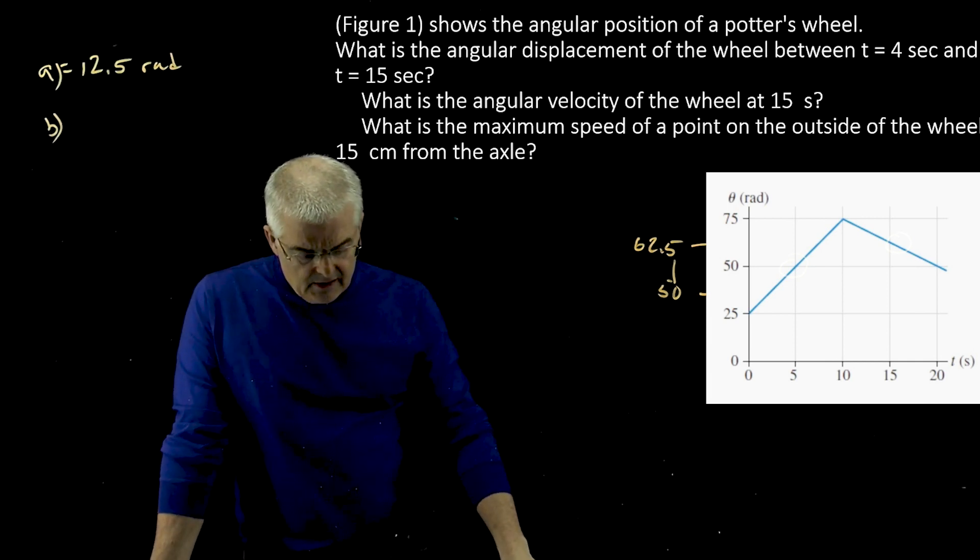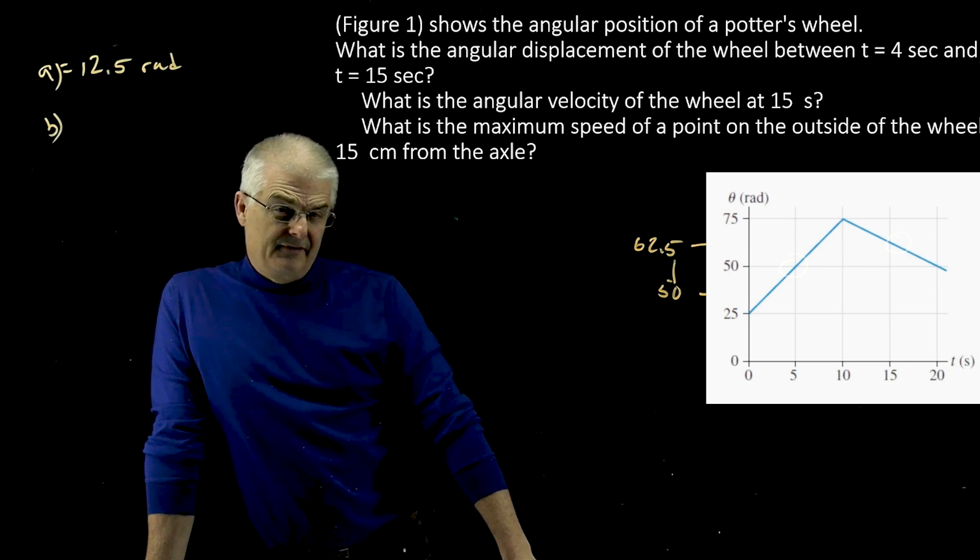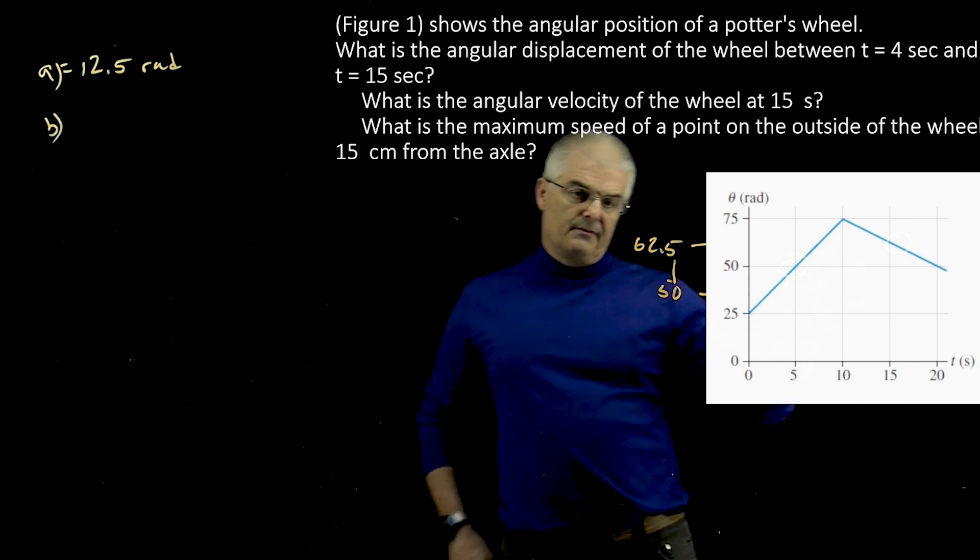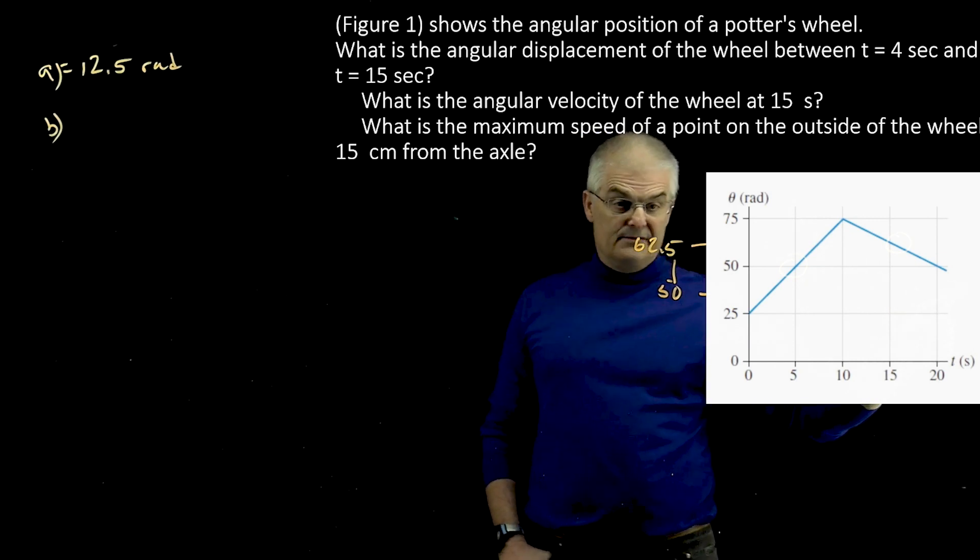Question B was, what is the angular velocity of the wheel at 15 seconds? I wish this graph wasn't so faded out. So at 15 seconds, you're at this point, but the angular speed is going to be the slope of this line.